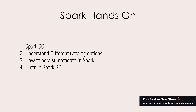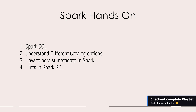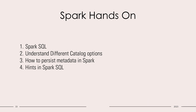Hello and welcome back. From the beginning of this course we were writing PySpark DataFrame APIs. Now Spark offers one more fantastic feature which is known as Spark SQL. Spark SQL is an abstraction of Spark Core APIs, so whatever we have done with Spark DataFrame APIs can also be done using Spark SQL. Today we will understand how Spark SQL works, the different catalog options, how to persist metadata, and the hints Spark SQL provides for optimizations.